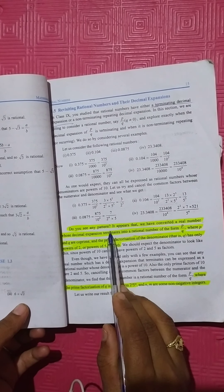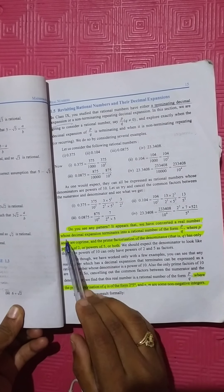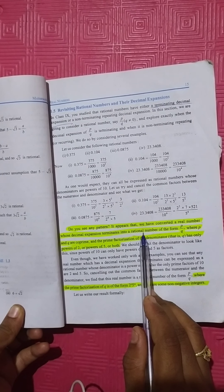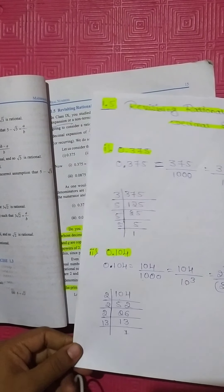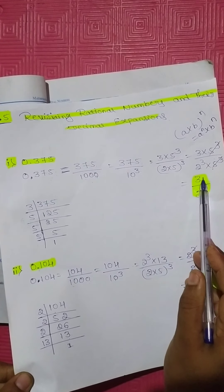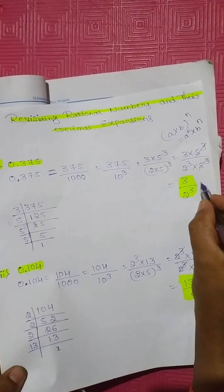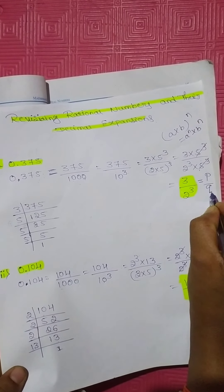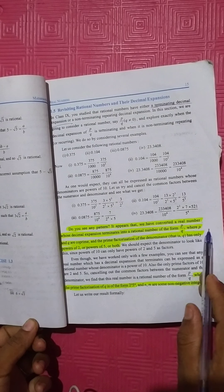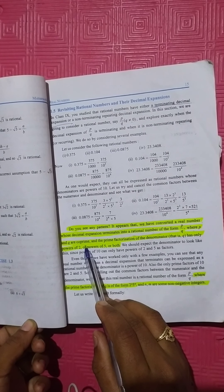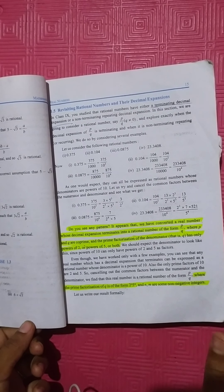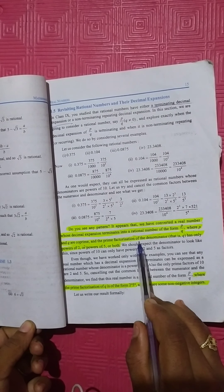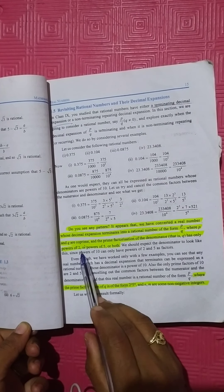Do you see any pattern? It appears that we have converted a real number whose decimal expansion terminates into a rational number of the form P by Q. The given question is a decimal expansion, but here we converted it to a rational number P by Q, where P and Q are co-prime. Co-prime means their highest common factor is 1. Here also P and Q have HCF equal to 1, and the prime factorization of the denominator has only powers of 2 or powers of 5, or both.